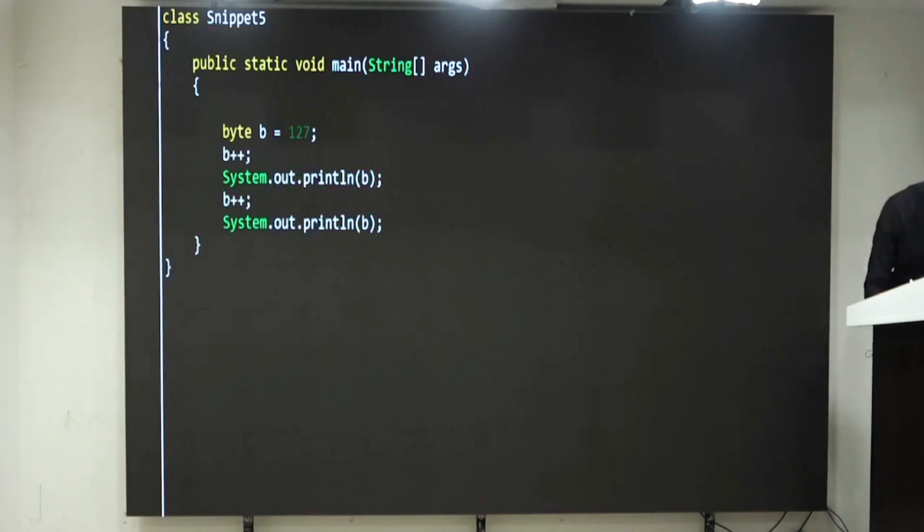Everyone knows range of byte is minimum value minus 128, minus 127, minus 126. Like that, you have minus 1, 0, 1, 2. Like that, 126 and maximum is 127. This is the range.